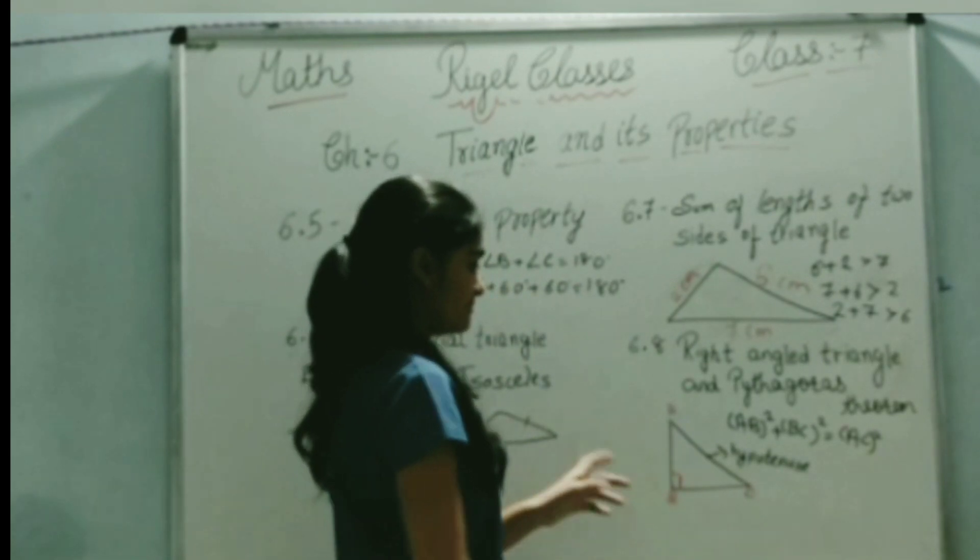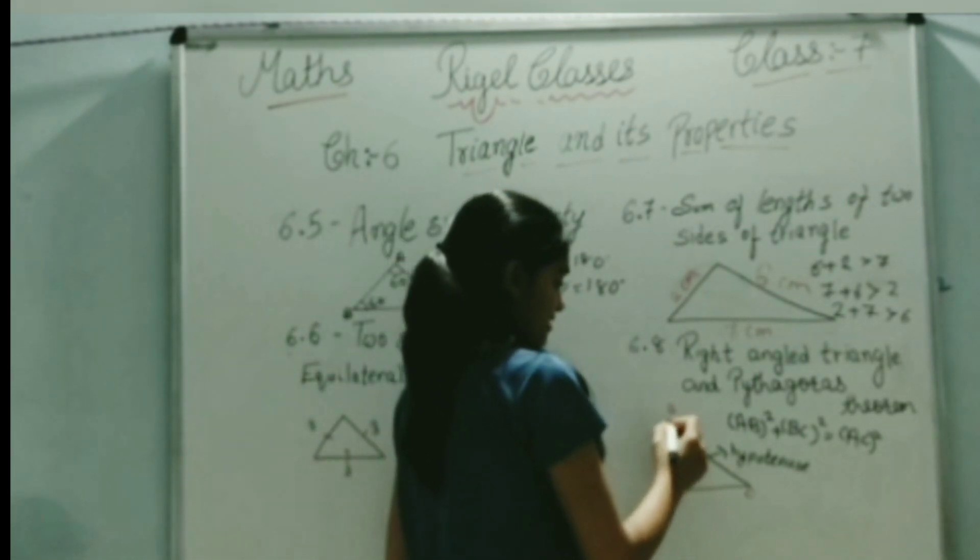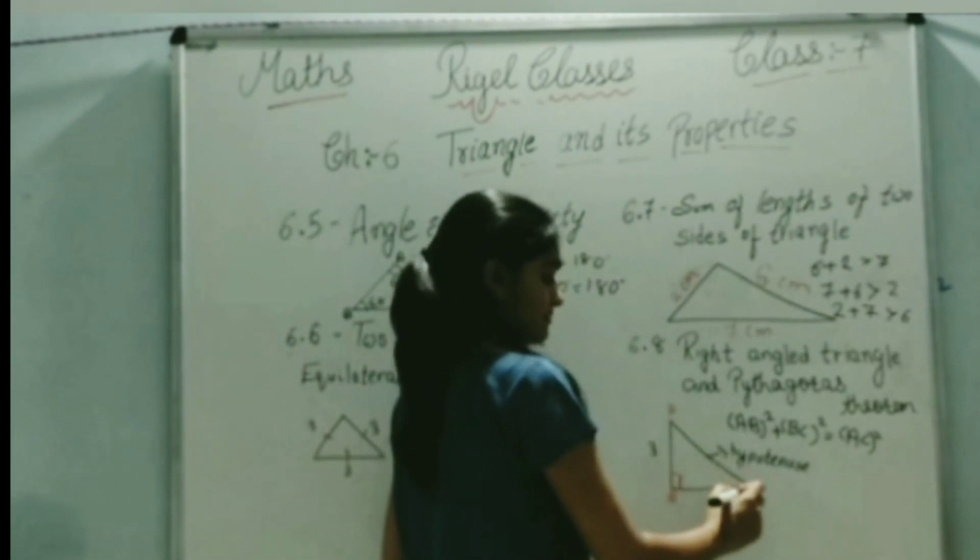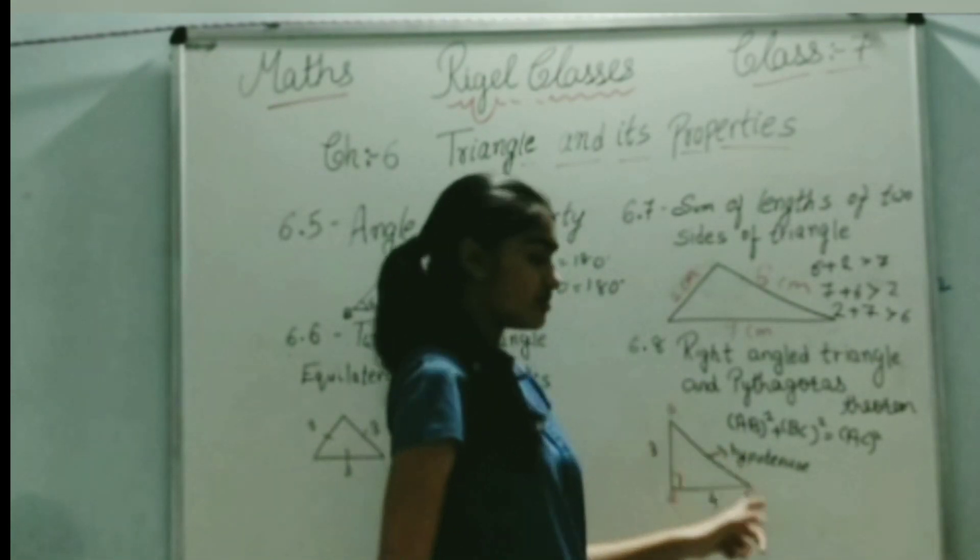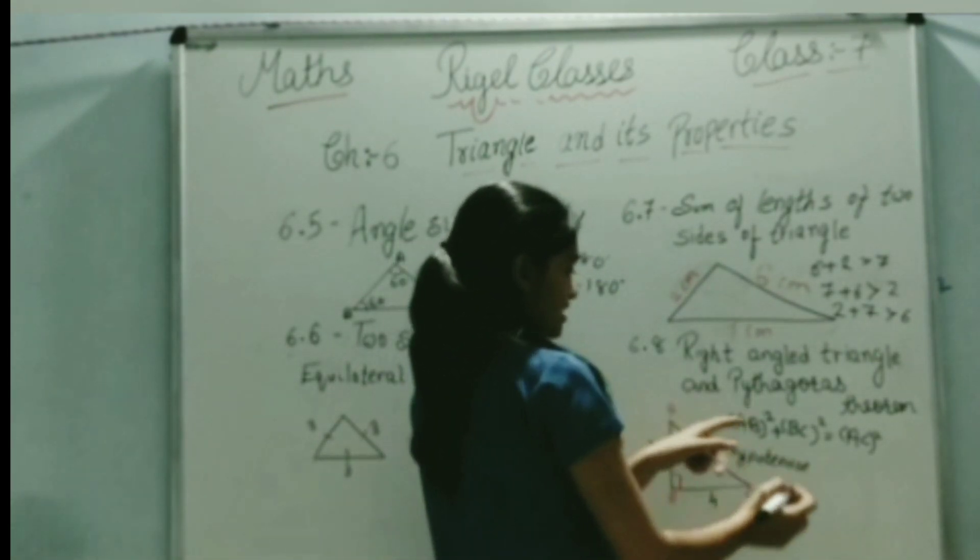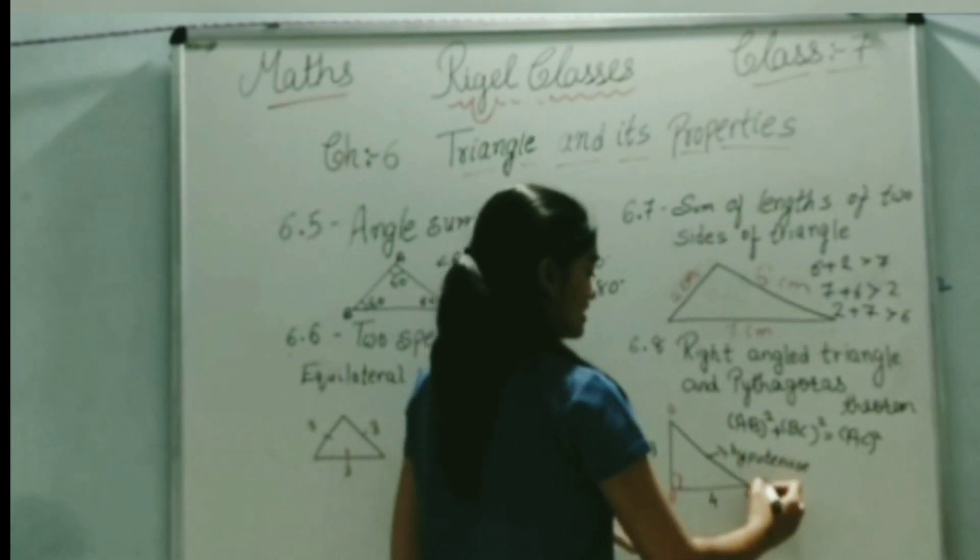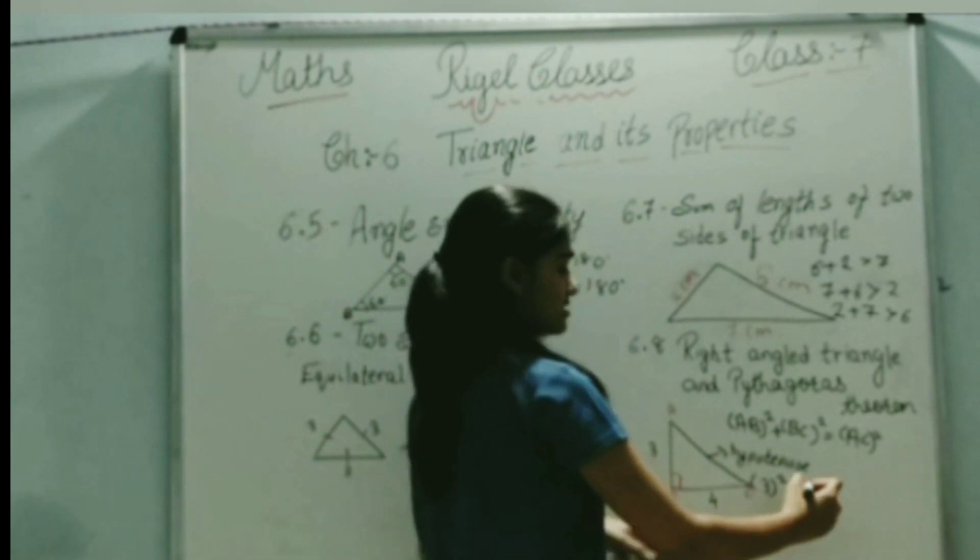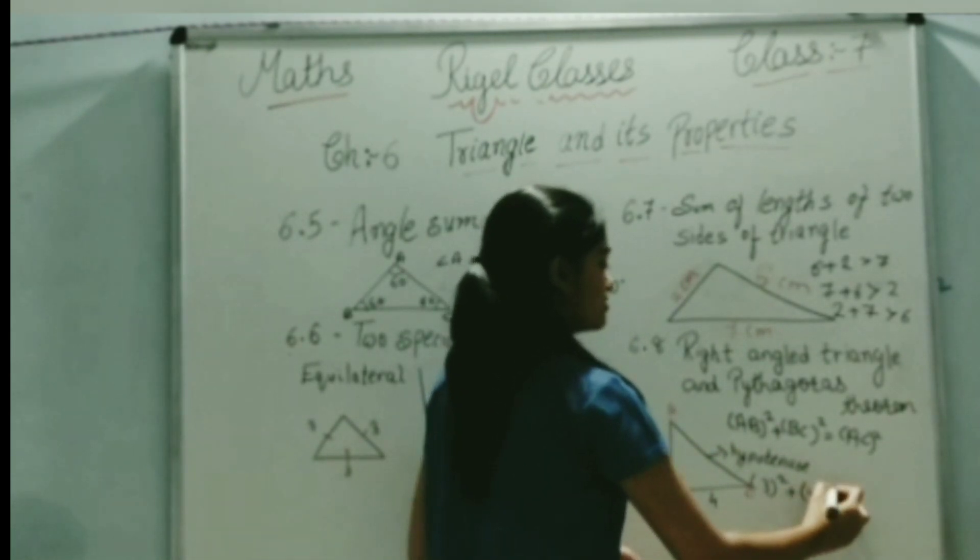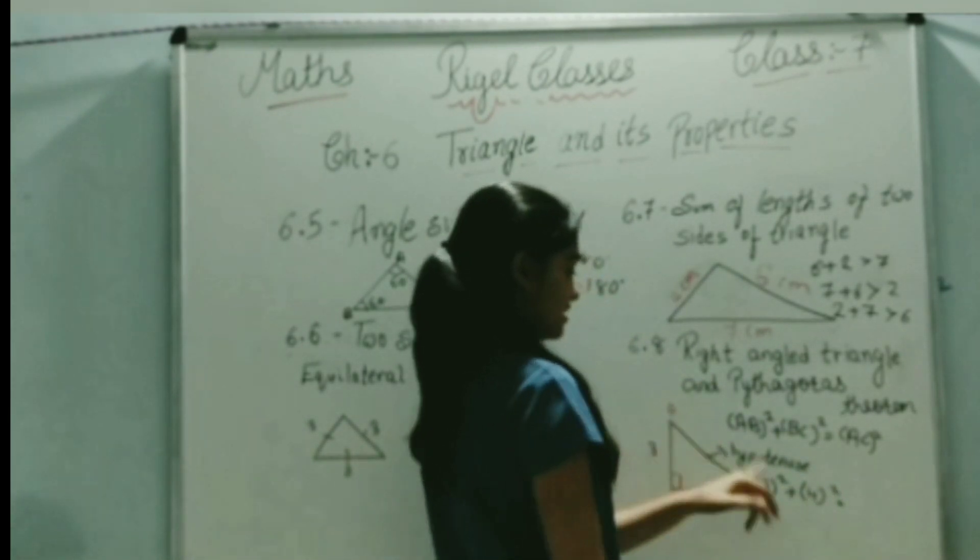Now let us take an example. If we take AB as 3 cm and BC as 4 cm, then we can find the length of AC. According to this formula, AB squared, that is 3 squared, plus BC squared, that is 4 squared, equals AC squared.